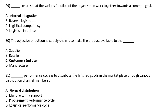The objective of Outbound Supply Chain is to make the product available to the — Option A: Supplier, Option B: Retailer, Option C: Customer, Option D: Manufacturer. The correct answer is Option C: Customer or End User.